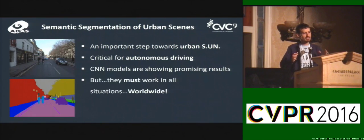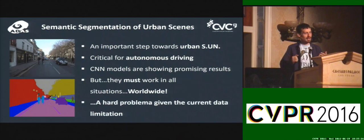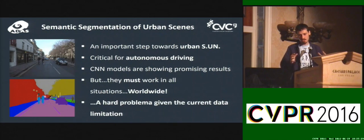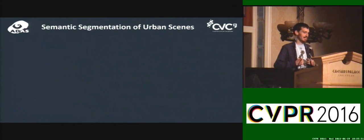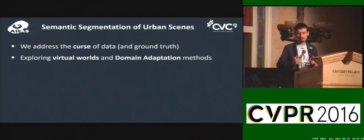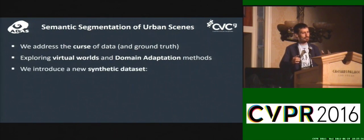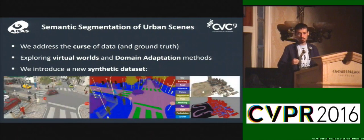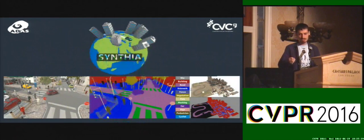If we want to have autonomous cars worldwide with current deep learning technology, we require a lot of training data and ground-truth. In order to address the scarcity of training data and ground-truth, we have proposed to use virtual worlds along with domain adaptation techniques in order to perform this task.